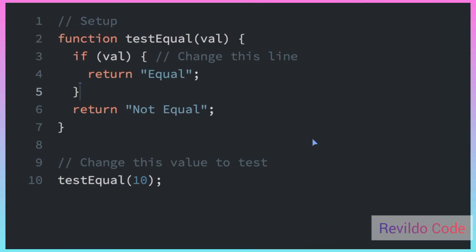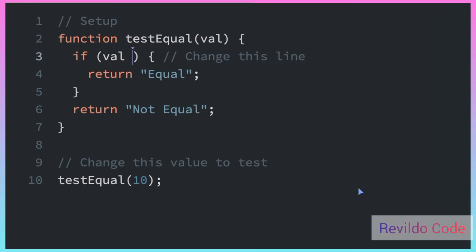There are many comparison operators in JavaScript that will return a Boolean of true or false. The most common is the equality operator, and it's often used in an if statement. So here, if we have this if statement, we're going to see if Val equals 12. To check if it equals 12, we're going to have to use the double equal sign — that is the equality operator.